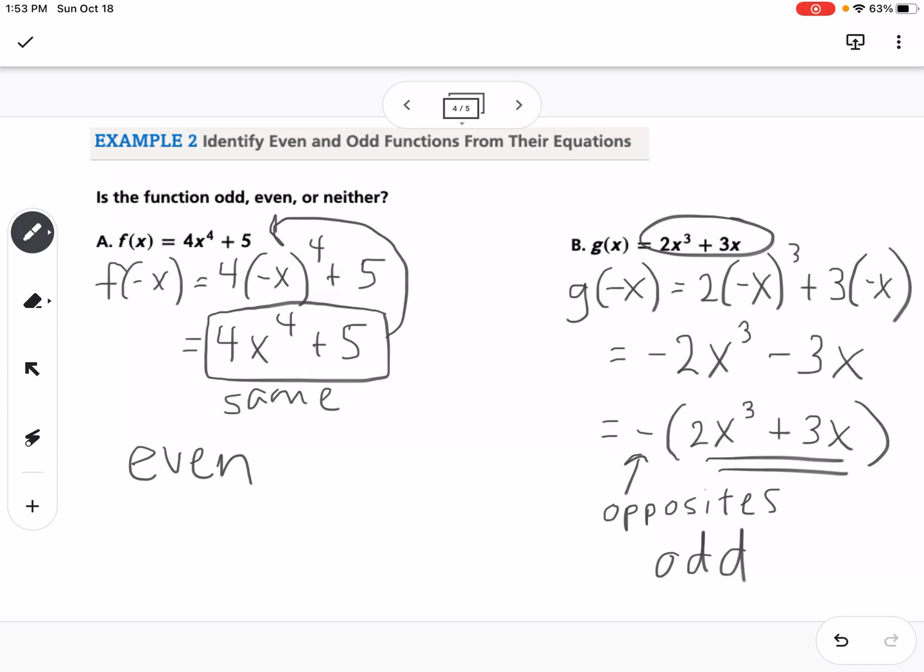So if you substitute in a negative x and you do all the simplifications and it's not the same and it's not an opposite, then that means that it's neither. So this is an example of even and odd.